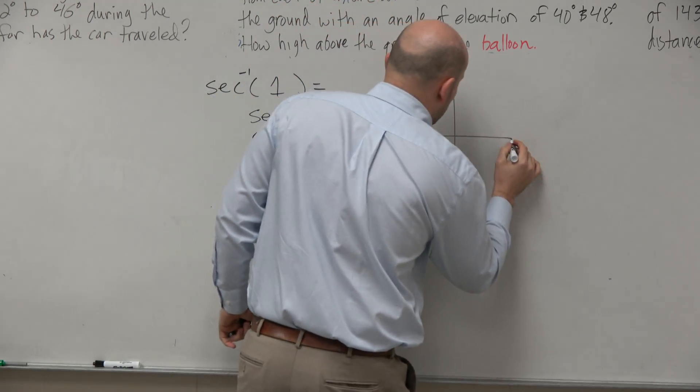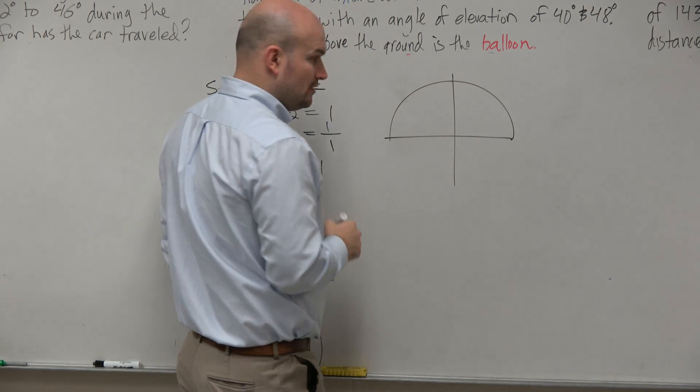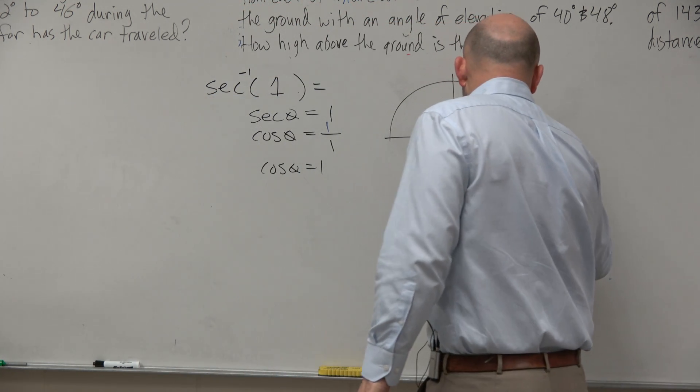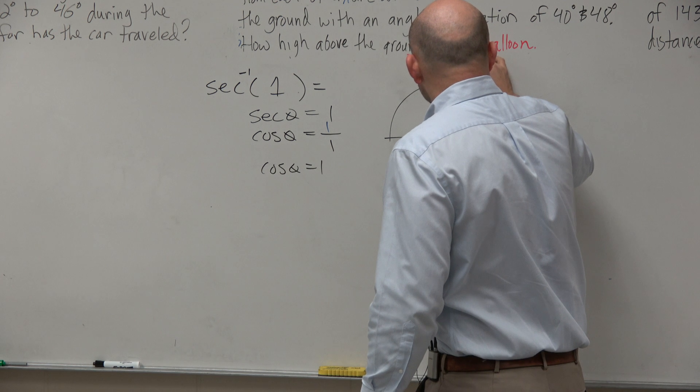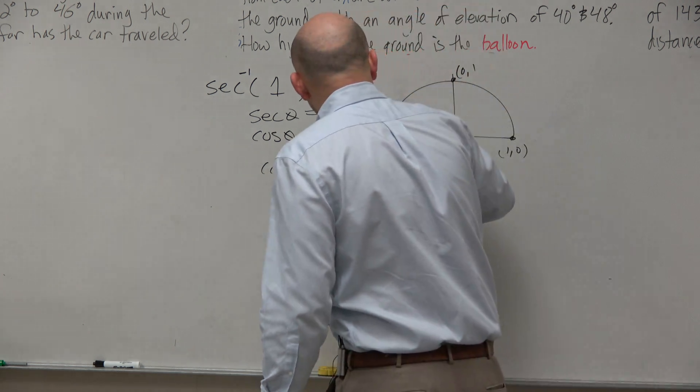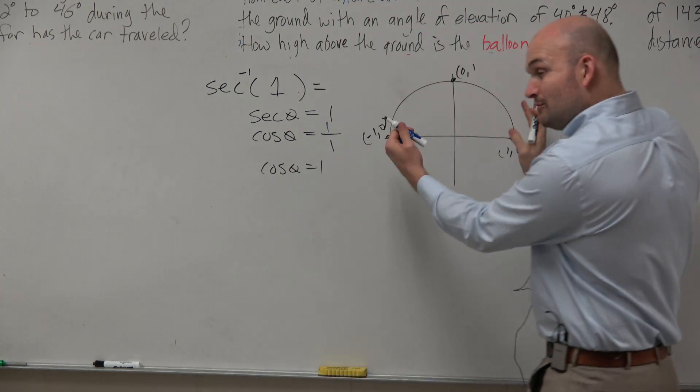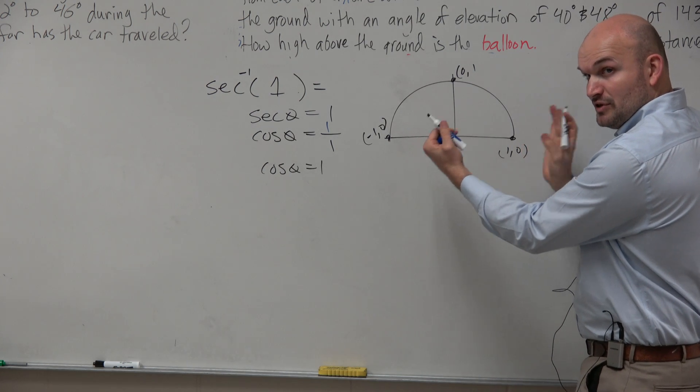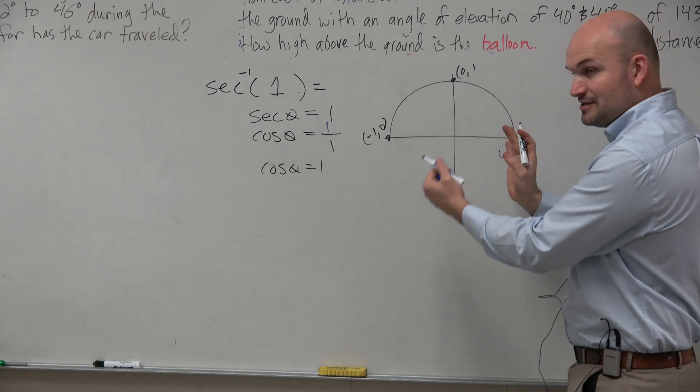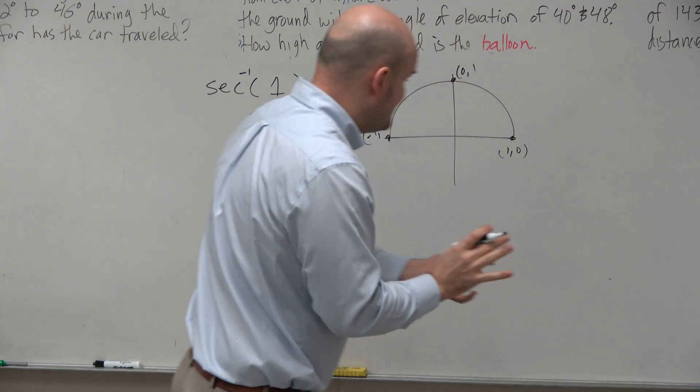So remember the domain restrictions are right from first and the second quadrant. Here are the coordinate points, 1 comma 0, 0 comma 1, negative 1 comma 0. So staying within this restricted domain, what angle gives me a cosine of 1? 0.